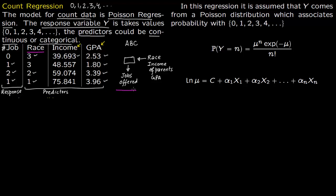Let us offer a brief understanding of what this Poisson regression model is and where it comes from. In the Poisson regression model, it is assumed that Y — the number of jobs or the response variable — comes from a Poisson distribution. Poisson distribution is a count distribution which associates probability with the count. It takes all discrete values from 0, 1, 2, 3, 4, 5, 6 and associates probability to each of these outcomes. The probability that Y will take on value n is: mu to the power of n, times exponential of minus mu, divided by n factorial.